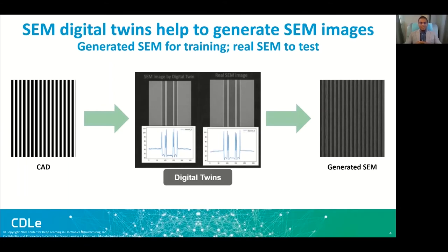As you can see in the slide, we use CAD data where we induce geometries, patterns, and also errors, and it goes through the digital twin to generate SEM images. The idea is to train a deep learning model on the generated SEM images, and once the model is trained, to use it for production on real SEM images.